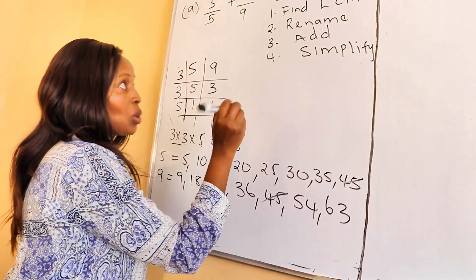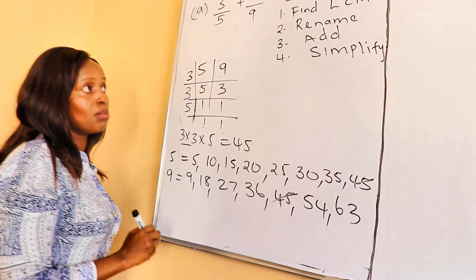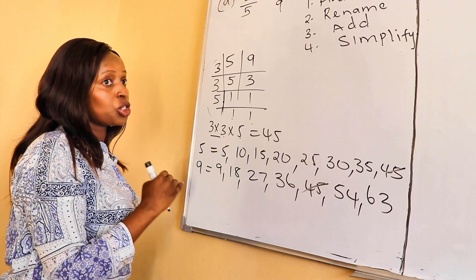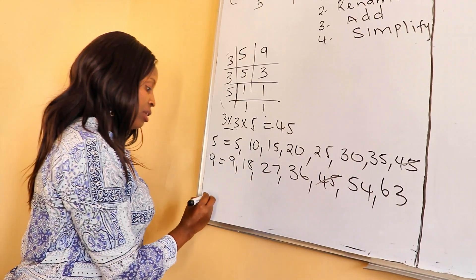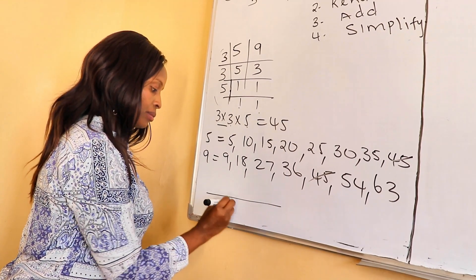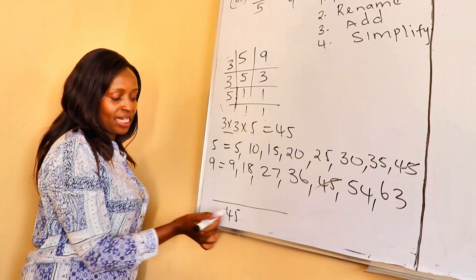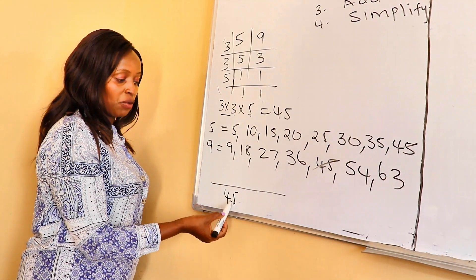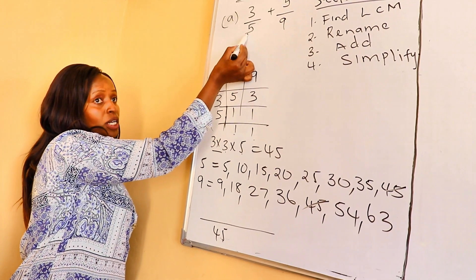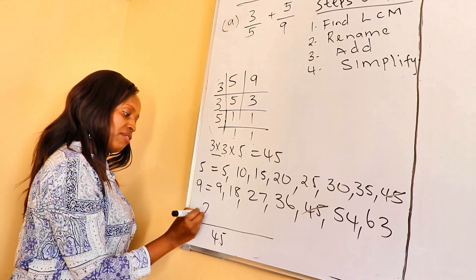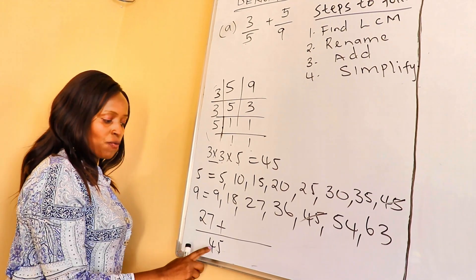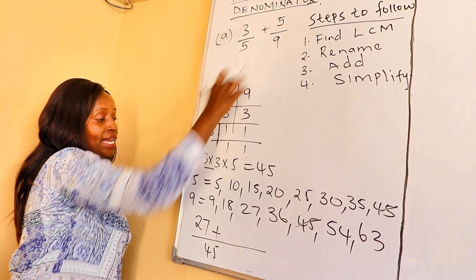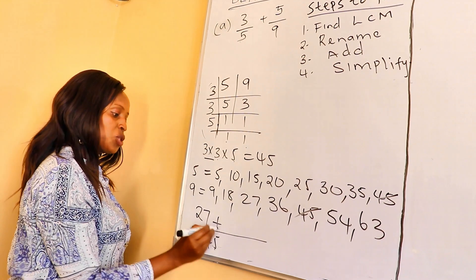So, you make sure now you rename them. Renaming means that you express the fraction under the same denominator. And our denominator is 45. So, you draw this line here and our 45 is down here as our denominator. Let's rename it. 45 divided by 5 is 9. 9 times 3 is 27. Plus, 45 divided by 9 is 5. 5 times 5 is 25.